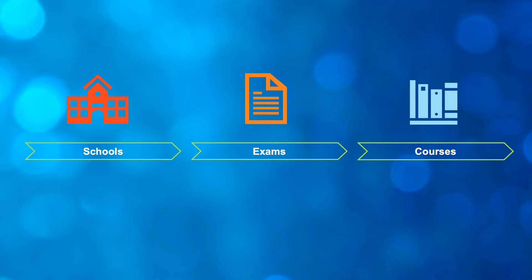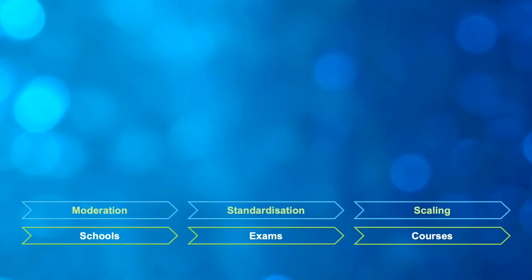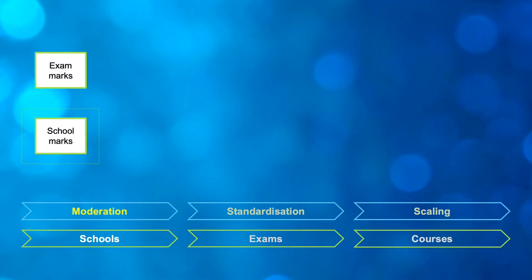So for schools we have a process called statistical moderation that the school curriculum and standards authority does. Then for different exams we have a process called standardization to make sure that things are nice and even that way. And then finally the process called scaling is where we actually look at the context in different courses to make adjustments that way. So firstly, moderation. This is where we actually look at your school marks and make sure that those school marks are fair compared to everybody else's school marks in WA.